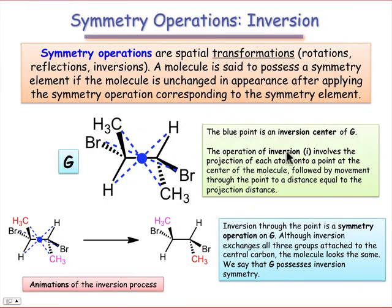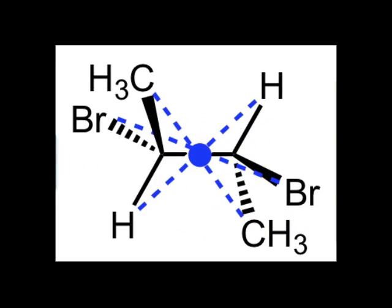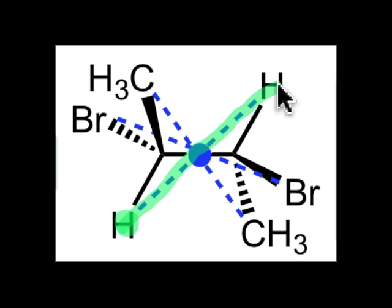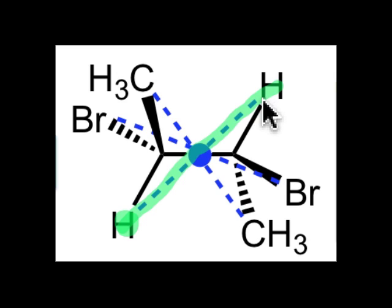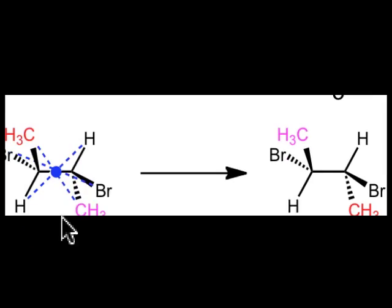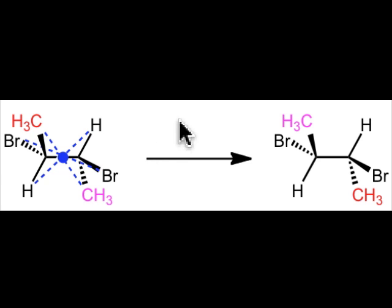To test for inversion symmetry, we apply the operation of inversion. The operation of inversion involves projection of each atom onto a point at the center of the molecule, followed by movement through that point to a distance equal to the projection distance. We do that for every single atom in the molecule. If the molecule is indistinguishable from the original after the operation of inversion, we say the molecule has inversion symmetry. Convince yourself that this conformation of molecule G, upon application of the inversion operation, produces a new structure indistinguishable from the original — and so we say that G possesses inversion symmetry.